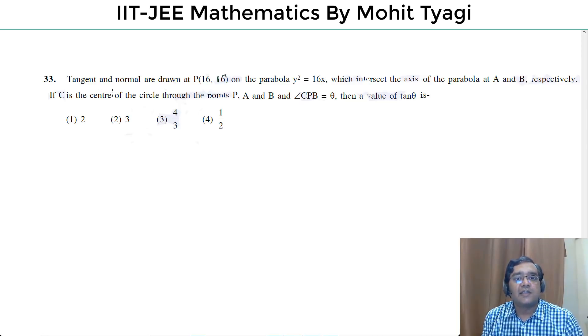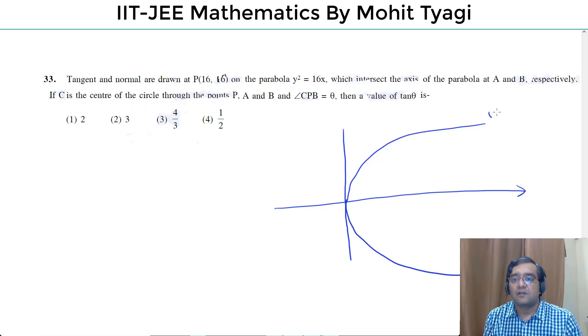Okay, this question says tangent and normal are drawn at 16,16 on the parabola y square is equal to 16x. So, a parabola which is y square is equal to 16x. So a is equal to 4, okay, this point is equal to at².